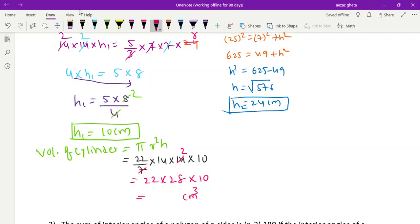Now CSA of cylinder. Formula is 2πrh = 2 × 22/7, radius of cylinder is 14, and height is 10.